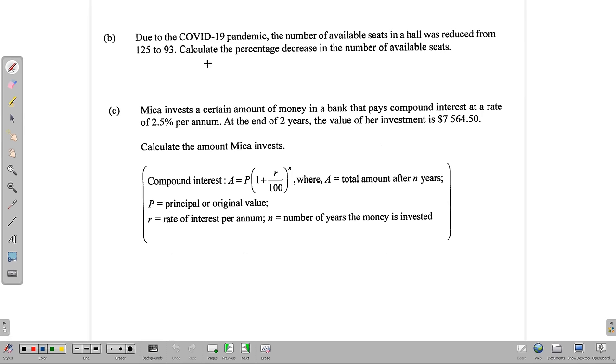Here we have, due to the COVID-19 pandemic, the number of available seats in a hall was reduced from 125 to 93. Calculate the percentage decrease in the number of available seats. So first we want to decide how many seats were lost. So we subtract here. 125 minus 93. That gives us 32 seats.